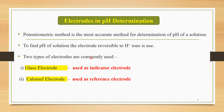Two types of electrodes are commonly used. The first one is the glass electrode, which is used as an indicator electrode, and the second one is the calomel electrode, which is used as a reference electrode. These two electrodes are commonly used in pH determination based on the potentiometric method.